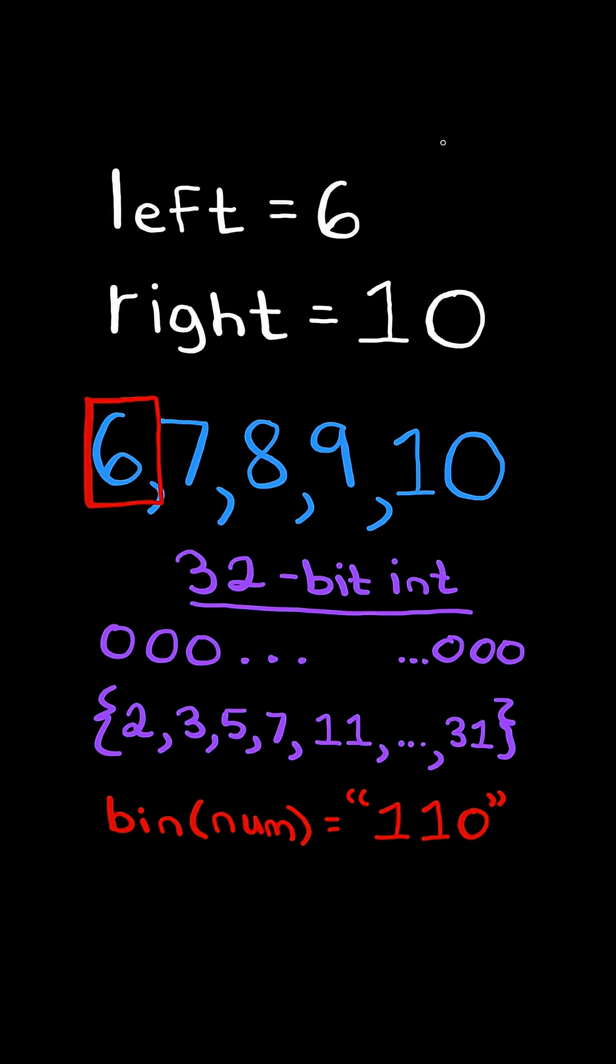For each number in the range, we convert it to its binary value, count the number of 1s, and determine if it's prime by checking if it's in the set.